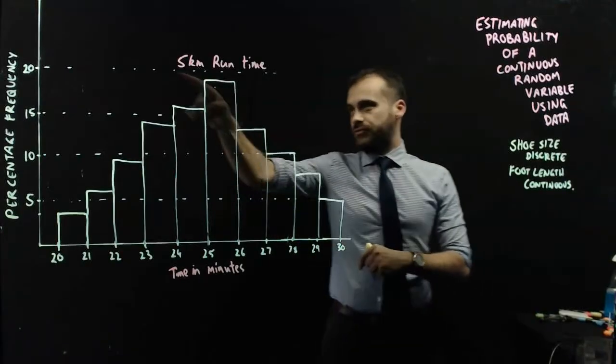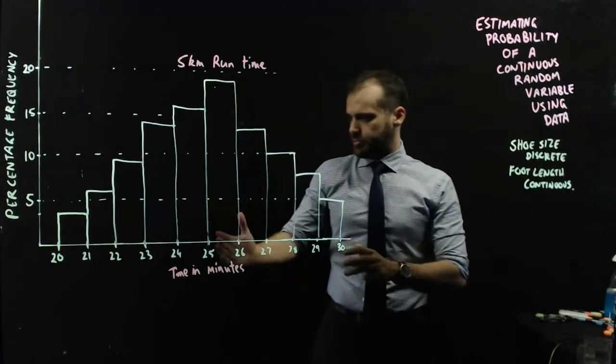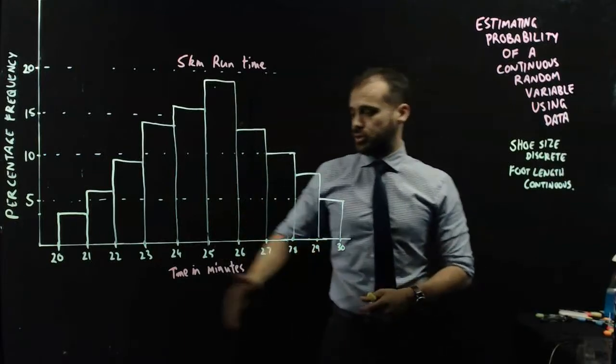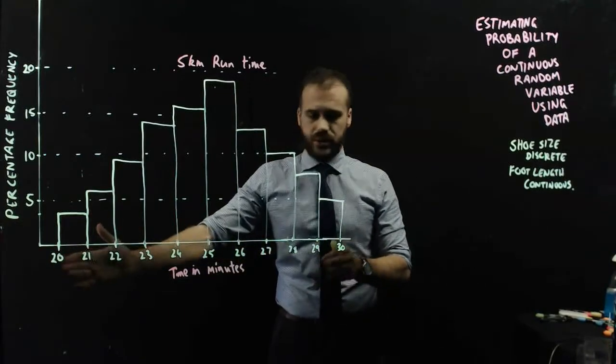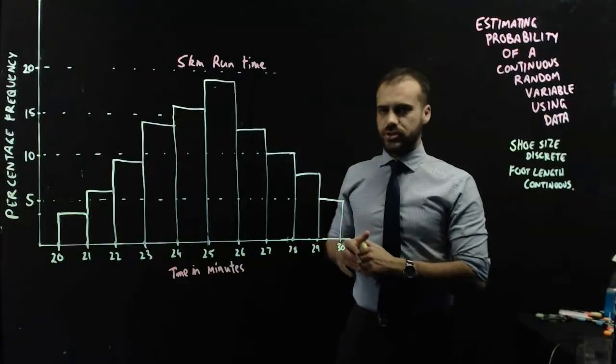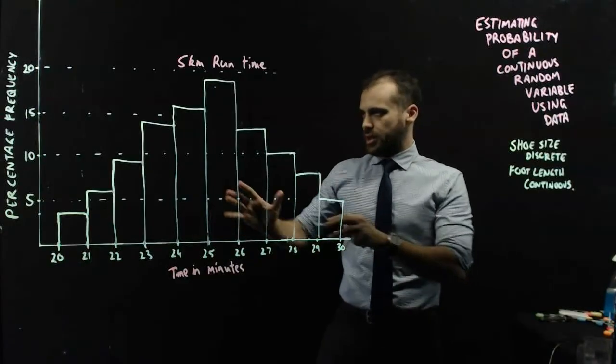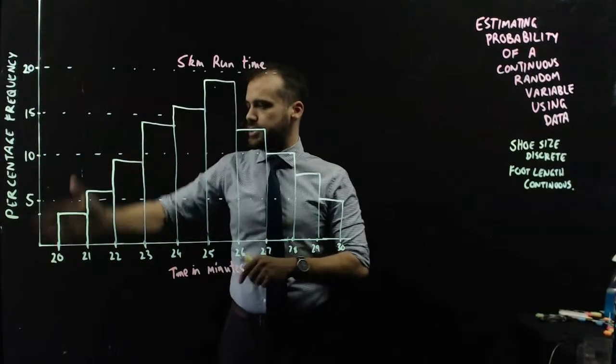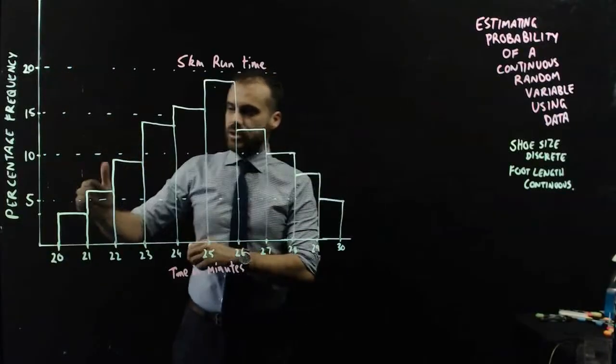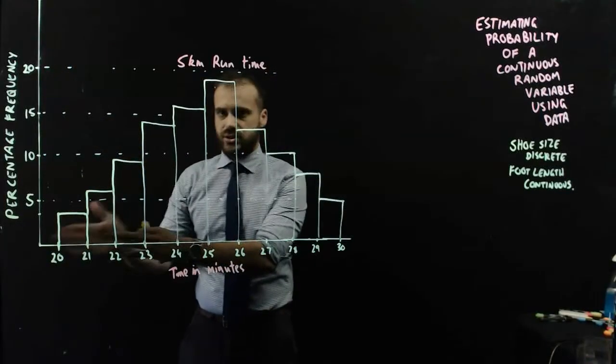And here we have my data. It's a histogram of 5K run times. Now, the students at this school can run 5Ks somewhere between 20 and 30 minutes. Well, there's one student that's going to be very angry that I've said that. The percentage frequency here is the percentage of students that can run that time.